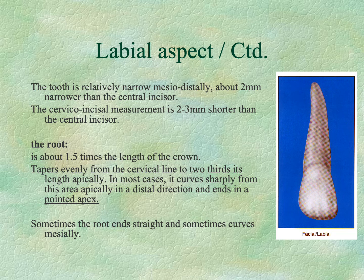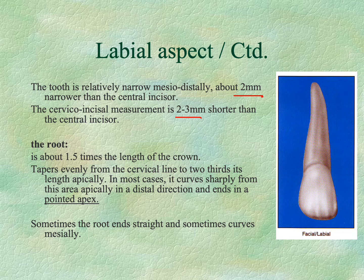The lateral incisor is approximately two millimeters narrower mesiodistally and two to three millimeters shorter cervicoincisal than the central incisor. The root is about one and a half times longer than the crown, tapering evenly from the cervical line to two-thirds its length, then curving sharply in a distal direction ending in a pointed apex — though it can also curve mesially or end straight.